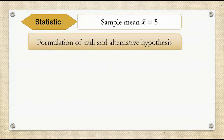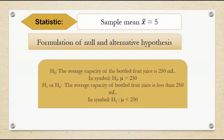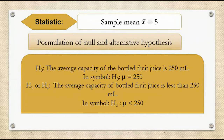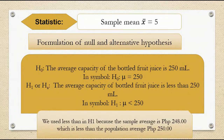Formulation of null and alternative hypothesis. Ho: the average capacity of the bottled fruit juice is 250 ml. In symbol, Ho: mu is equal to 250. H1: the average capacity of bottled fruit juice is less than 250 ml. In symbol, H1: mu is less than 250. We used less than in H1 because the sample average is 248 ml, which is less than the population average of 250 ml.